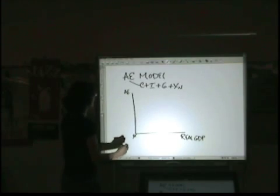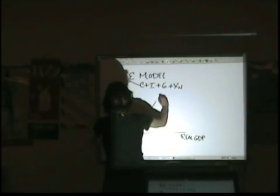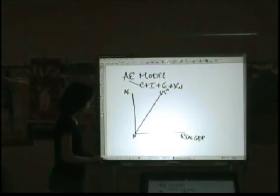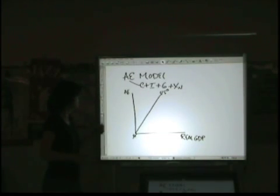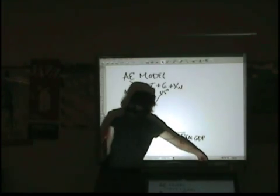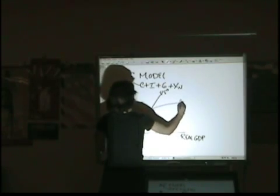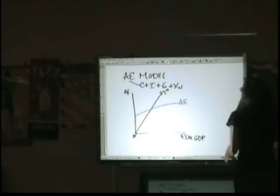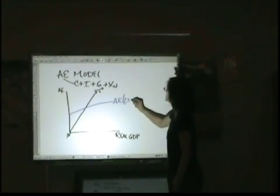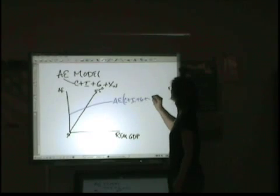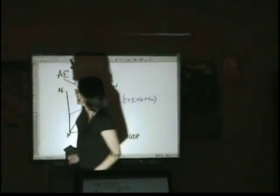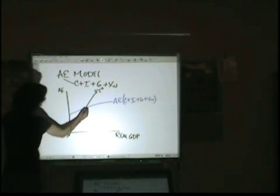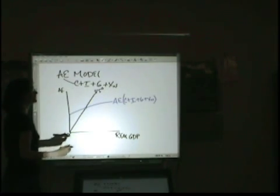The next thing we want to put in here is your 45-degree reference line. Try to get it as close to 45 degrees as you can. When we draw the aggregate expenditures function, remember that we are including all those components of GDP: consumption, investment, government, and net exports. The point where these two lines cross is going to represent your full employment output.